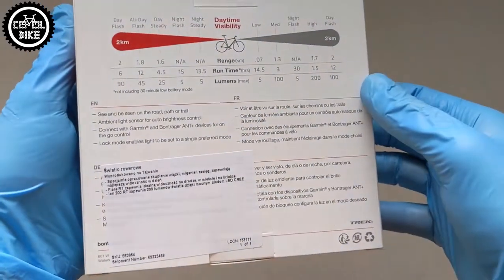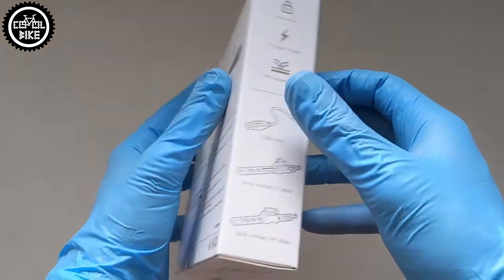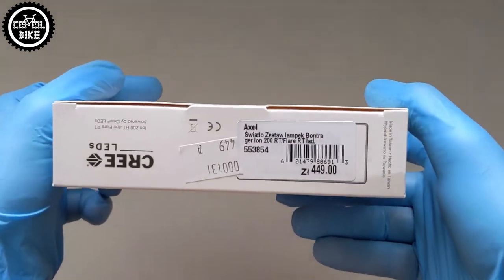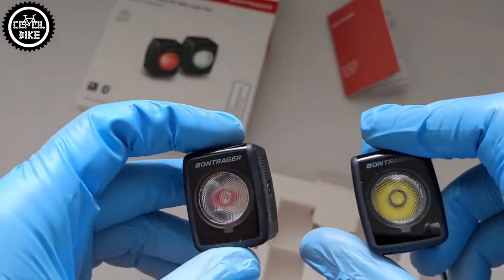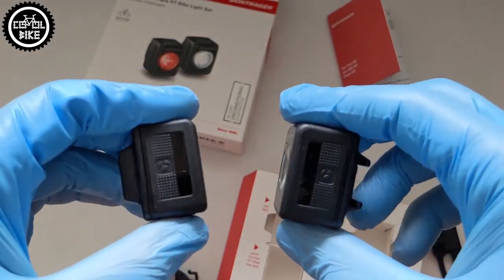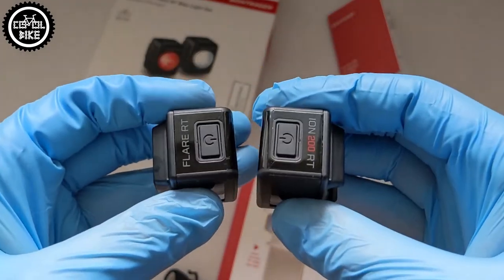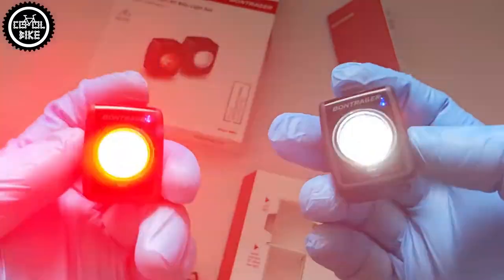The last and most expensive lights are Bontrager Ion and Flair 200. This set cost over 100 euros but offer the most possibilities. The rubber bands are the same quality as the previous lights but unlike the Recon's you can attach them only in one way. The lights can be combined with Garmin and Bontrager devices. They also have a Twilight sensor and five lightning modes.